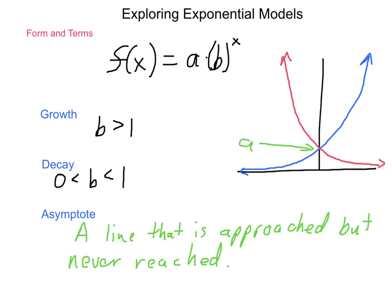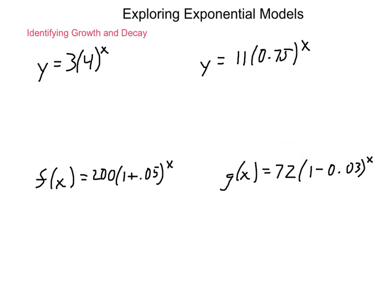So our first order of business in working with exponential models is being able to identify growth or decay. Here are four different functions that are given. We need to be able to identify whether it's a growth function or a decay function and where our starting value would be.